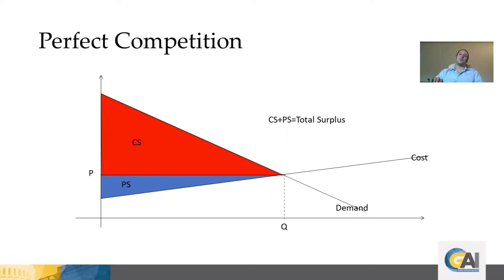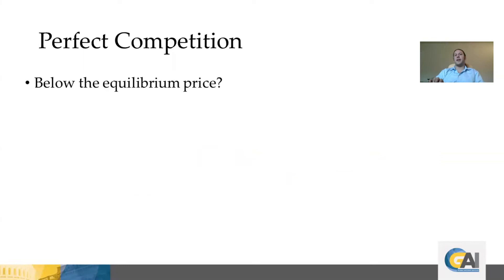We compare the total surplus in the competitive market to what we might get with a different price and quantity. To illustrate how total surplus might differ, let's consider a price below the equilibrium price. This can be justified by the existence of a price ceiling imposed by the government, which artificially pushes the price in an otherwise perfectly competitive market downward.